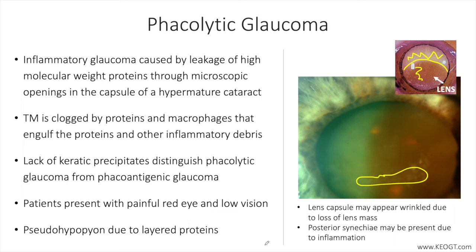Miotics like pilocarpine should be avoided as they might increase inflammation and formation of synechia. Cycloplegics like atropine can be used to assist in breaking posterior synechia and to avoid formation of new synechia. Steroid drops can be used several times per day with the goal of bridging the patient to the definitive treatment, which is cataract extraction.